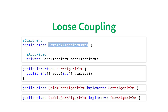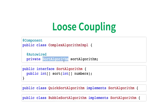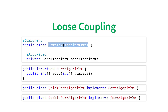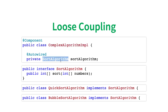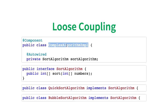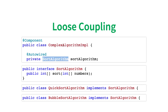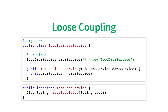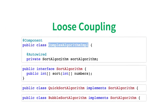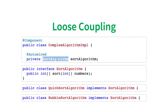ComplexAlgorithmImpl is now made to use the SortAlgorithm interface. In ComplexAlgorithmImpl, we create a constructor accepting SortAlgorithm as input — similar to how TodoBusinessImpl accepts TodoDataService as input. ComplexAlgorithmImpl now has a constructor which accepts SortAlgorithm as an input.